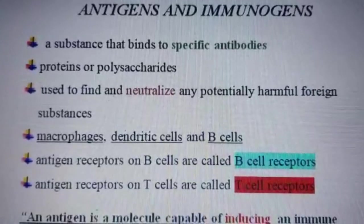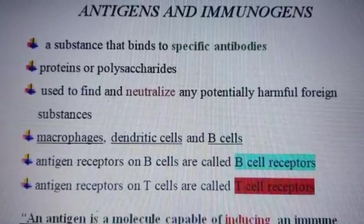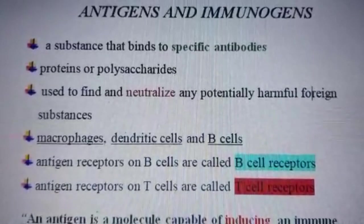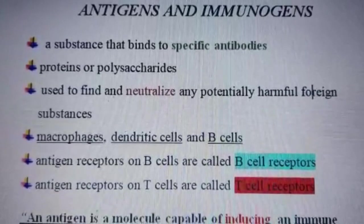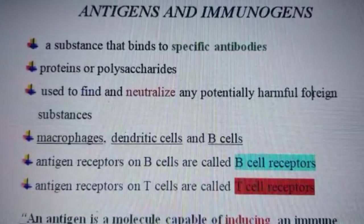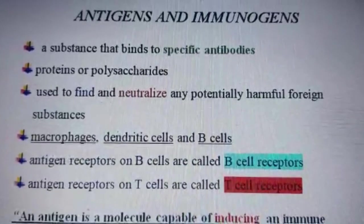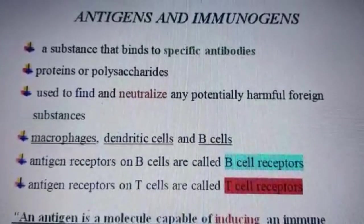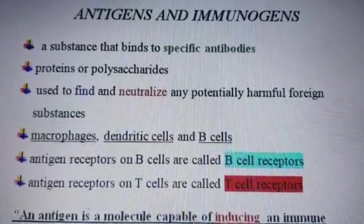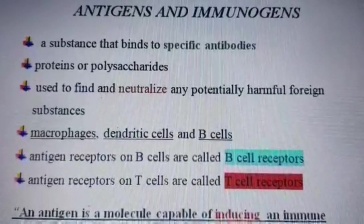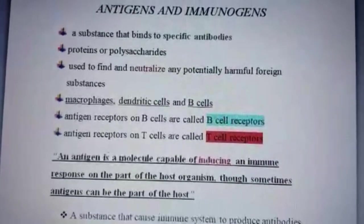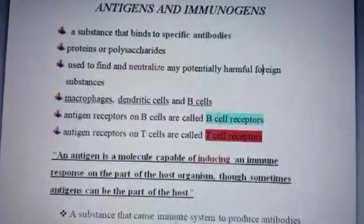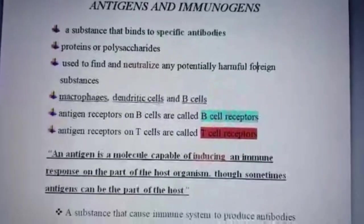What are antigens? Antigens are substances that are present on the surface of viruses, bacteria, or fungi. The immune system tries to recognize and destroy substances that contain antigens. Antigens are usually proteins or polysaccharides that bind to specific antibodies, and are used to find and neutralize any potentially harmful foreign substances that have entered into the cell.